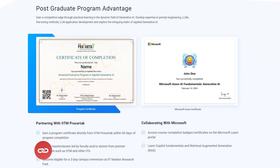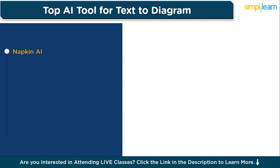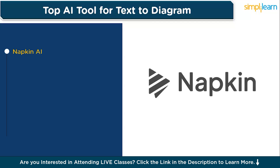Let's get started with our first tool: Napkin AI. Napkin AI leverages natural language processing to turn simple text inputs into structured, professional diagrams. It is ideal for quickly creating flowcharts, architecture diagrams, and process maps. Napkin AI can help both technical and non-technical users design visually appealing diagrams with ease — simply describe your process or workflow in plain text and Napkin AI will instantly generate a visual representation.